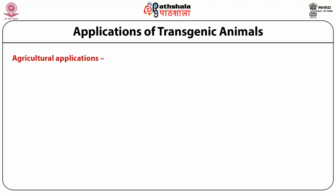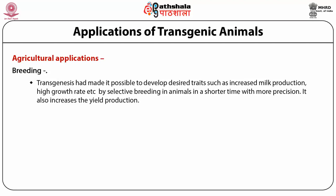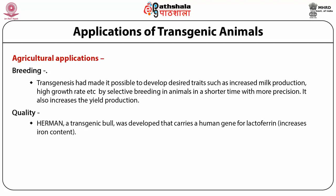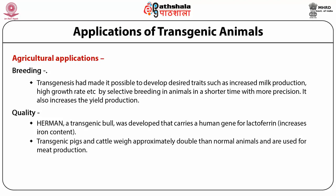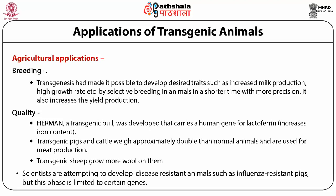In the agricultural field, transgenic animals are used for breeding and quality purposes. Transgenics have made it possible to develop desired traits such as increased meat production and high growth rate by selective breeding in a shorter time with more precision. It also increases yield production in cattle. For quality, transgenic bull Hermann was developed carrying a human gene for lactoferrin, increasing iron content. Transgenic pigs and cattle can be approximately double the size of normal animals used for meat production. Transgenic sheep can produce more wool. Scientists are attempting to develop disease-resistant animals such as influenza-resistant pigs, though this is limited to certain genes.